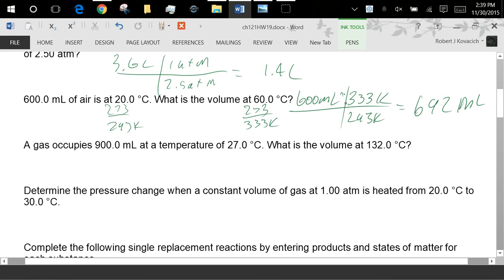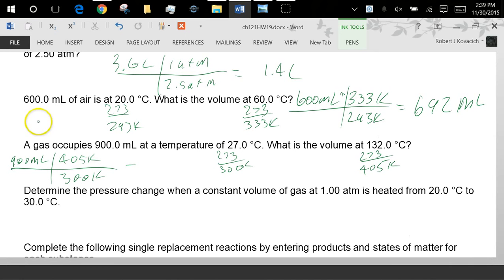Pretty much the same problem with this one, right? Start with the volume, I'm going to go to a new volume, I've got a temperature, I'm going to go to a new temperature and the temp again is going to go up. So 273 here, 300K. And so 900 milliliters and since the temp went up I'll put the bigger number of this 405 here and 300 down here. We're good with that.